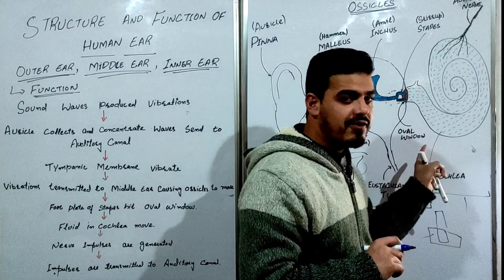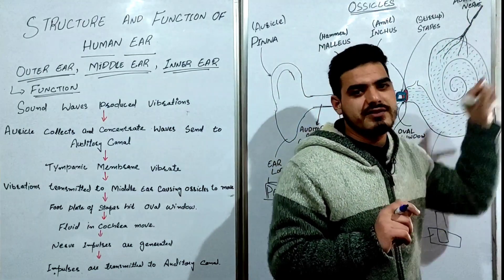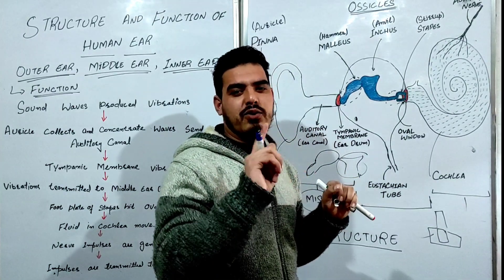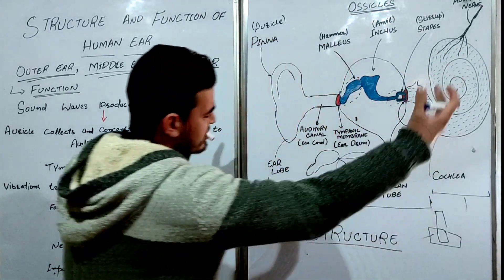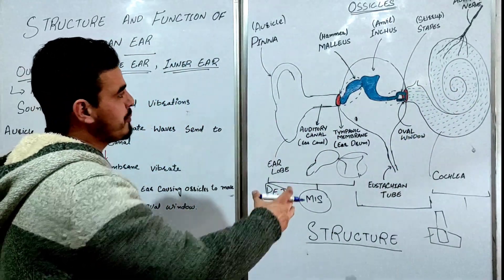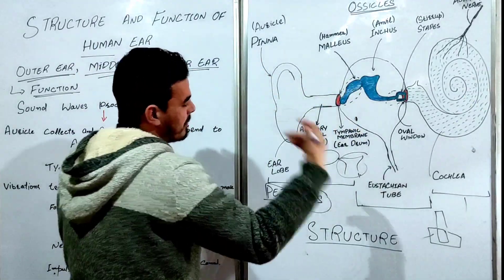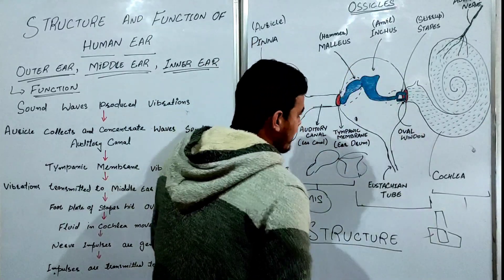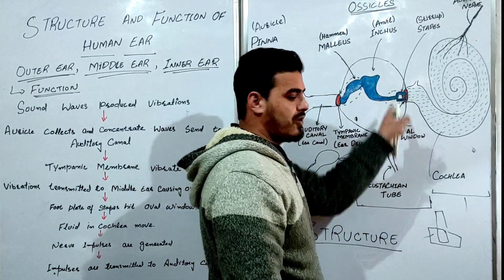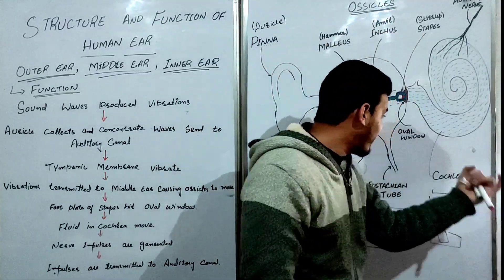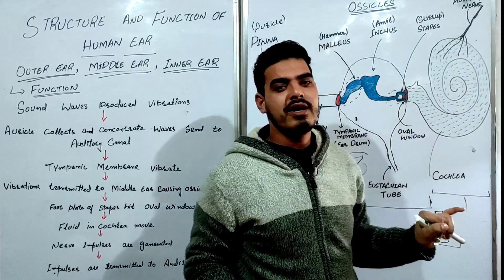In the inner ear you can see a snail-like structure called the cochlea. The cochlea contains fluid — actually two types: perilymph and endolymph. Attached to the cochlea are the auditory (sensory) nerves, which sense sound and transmit signals to the brain. So the three parts are: outer ear (pinna, auditory canal, tympanic membrane), middle ear (malleus, incus, stapes, oval window, Eustachian tube), and inner ear (cochlea, fluids, auditory nerve).